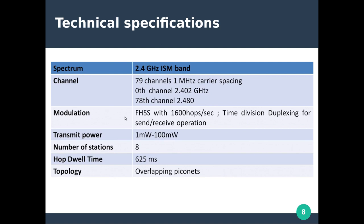The modulation technique used is Frequency Hopping Spread Spectrum (FHSS), where the frequency hops across channels using a hopping sequence communicated between devices in advance, at a speed of 1,600 hops per second. It uses Time Division Multiplexing for sending and receiving data. Transmission power varies from 1 milliwatt to 100 milliwatt depending on the application class.